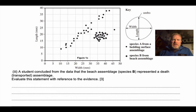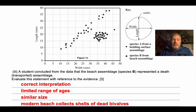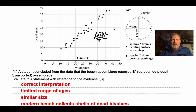Species B has been interpreted as a death assemblage. If you look at Species B, we can see a different distribution of data — it is very clearly clustered. The student who interpreted this as a death assemblage is correct: there's a very limited range of sizes and ages. The environment in which they're found — a modern beach — is the type of environment where shells of dead bivalves will get washed up. There's also some evidence of damage to the shells, adding further evidence that this assemblage has been transported.